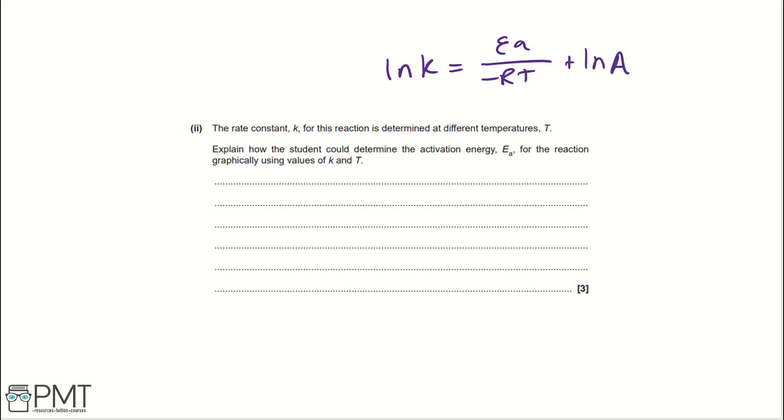So, our first thing when answering this question that we need to do is tell the student to plot lnK against 1 over T. And that means that our gradient will be EA over minus R. So, find gradient, and then we could also write in brackets what the gradient is, EA over minus R. And finally, to get EA, we need to times gradient by minus R, which is a value given in the data sheet, so you don't need to specify. But then you can write that it equals EA.